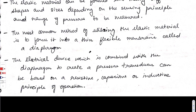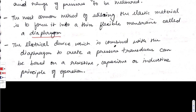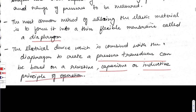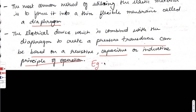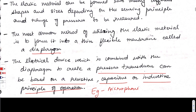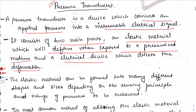The most common method is to form the elastic material into a thin flexible membrane called a diaphragm. The electrical device combined with the diaphragm can be based on resistive, capacitive, or inductive principle of operation. The most common example of a pressure transducer is a microphone, found in smartphones, earphones, and recording microphones.